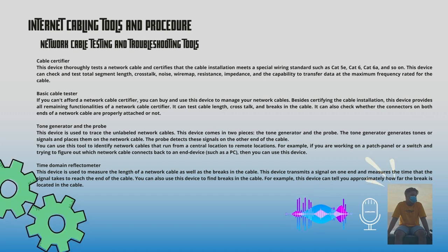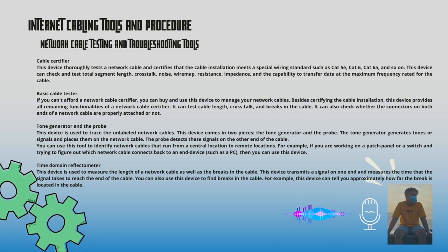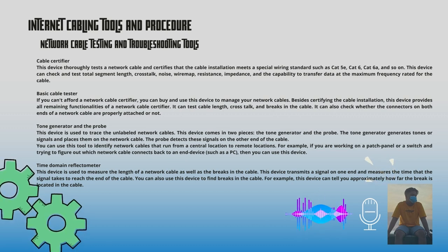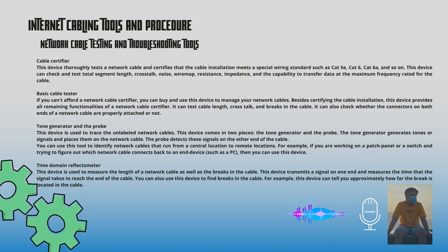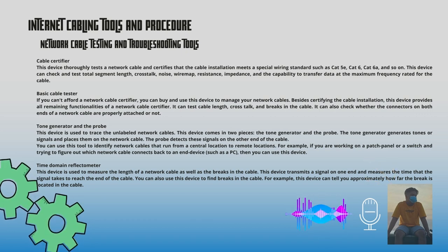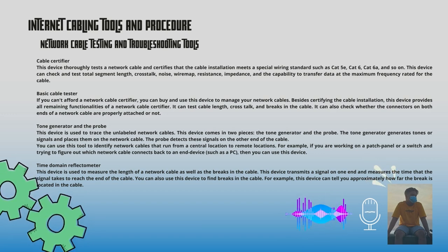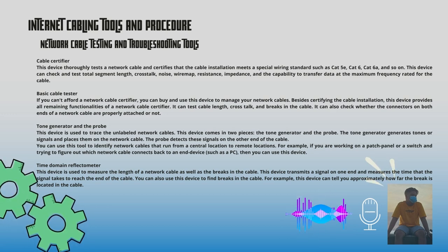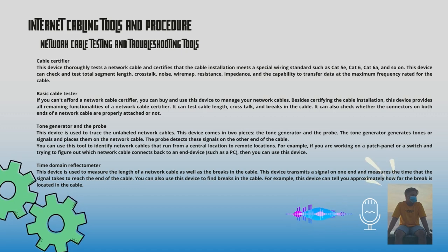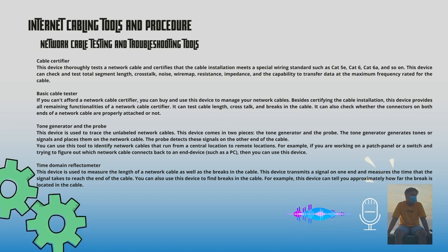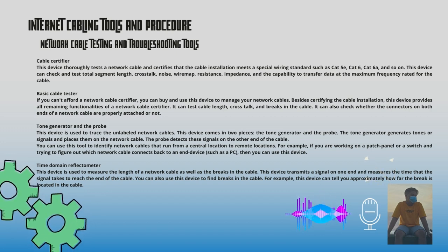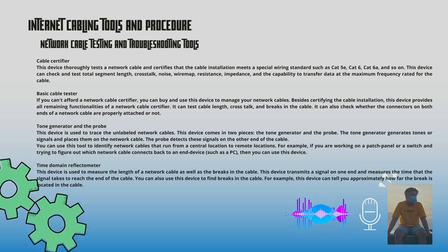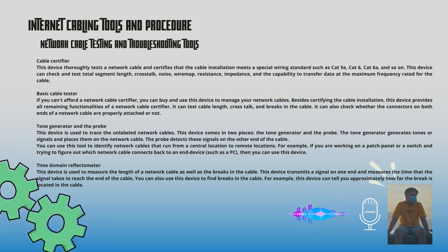The tone generator generates tones or signals and places them on the network cable, while the probe detects these signals on the other end. You can use this tool to identify network cables that run from a central location to remote locations. For example, if you are working on a patch panel or a switch and need to figure out which network cable connects back to an end device such as a PC, place the tone generator at the end device and use the probe at the switch or patch panel to determine which cable it is connected to.